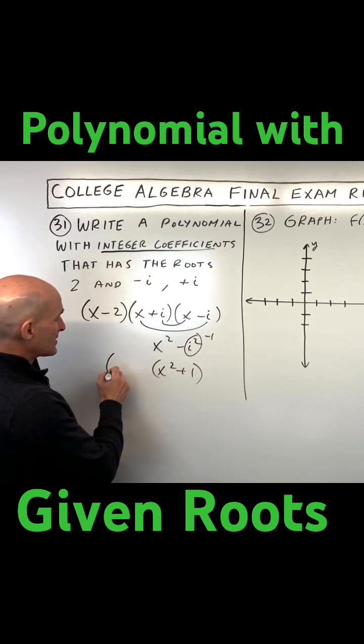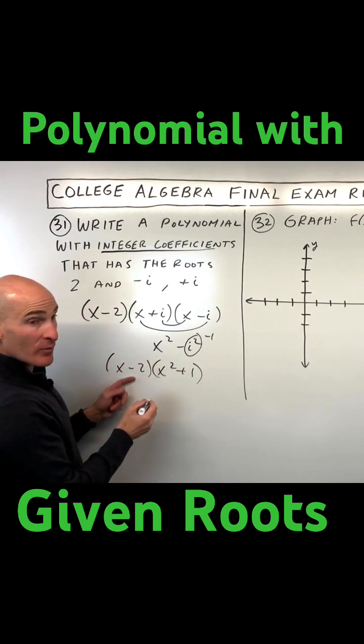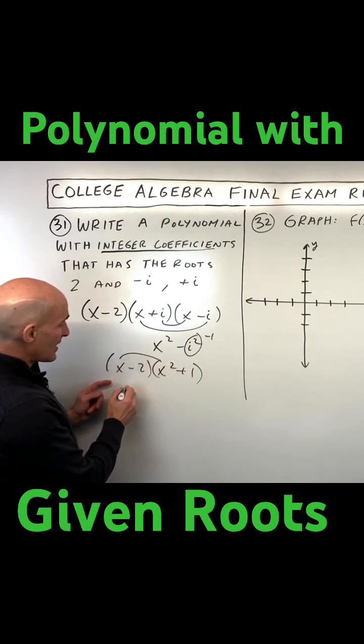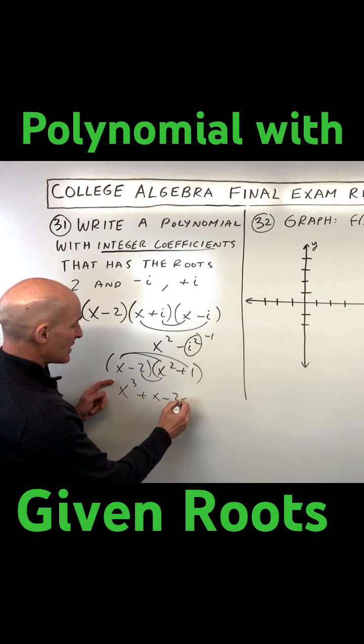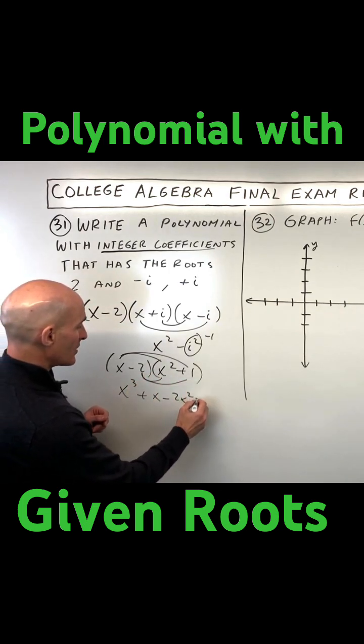And we have x minus 2. So now we just have to multiply these together. x times x squared is x cubed. x times 1 is x. Negative 2 times x squared is negative 2x squared. And negative 2 times positive 1 is negative...